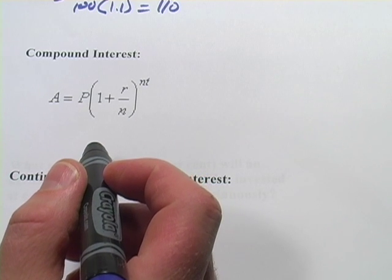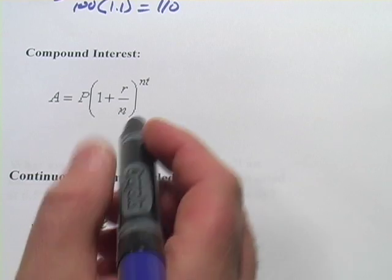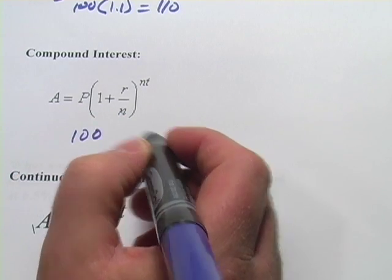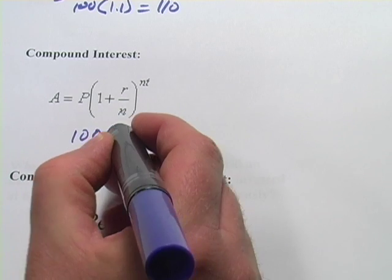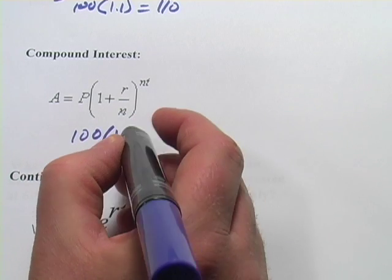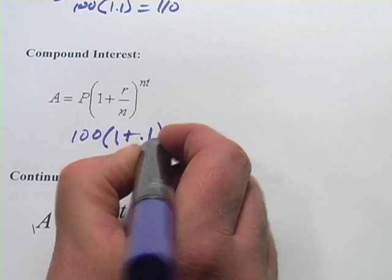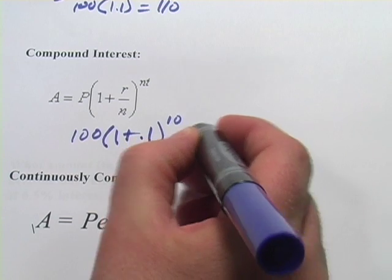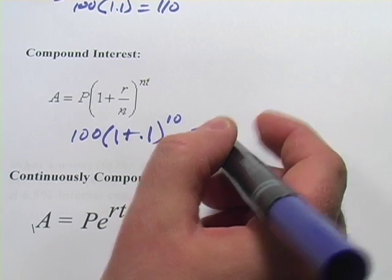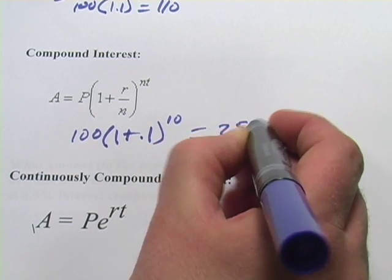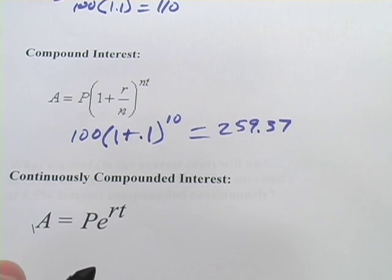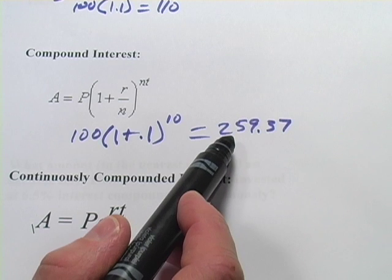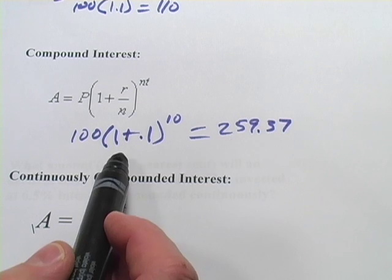So if you had $100, and you compounded it just, you had a 10% rate, and it was compounded every year, which is not bad, so it would be 1 plus .1 to the 10th there, and you let that go for 10 years, what you would get at the end of that is $259.37. So that's kind of the magic of compound interest. The other guy only gave you $110. You're more than doubling your money in 10 years with compound interest.